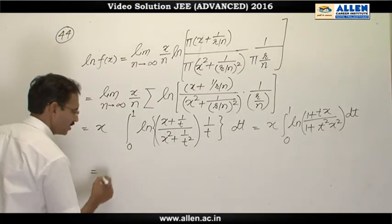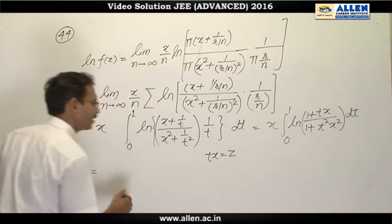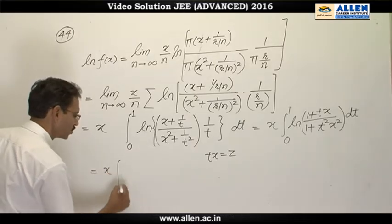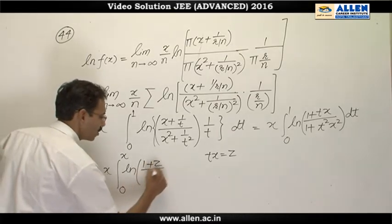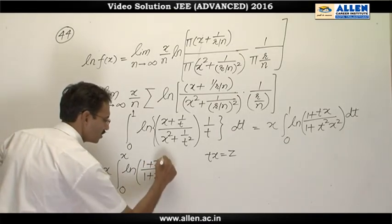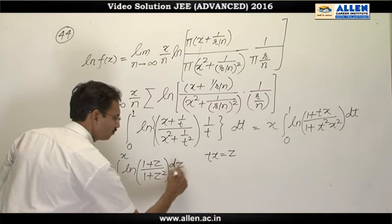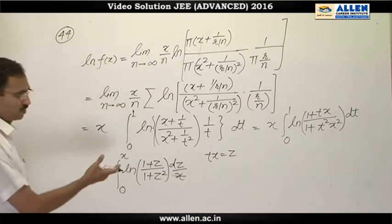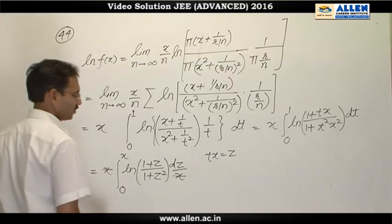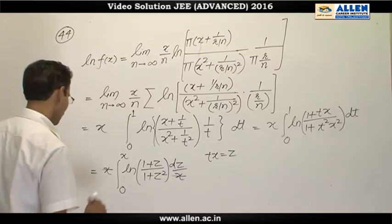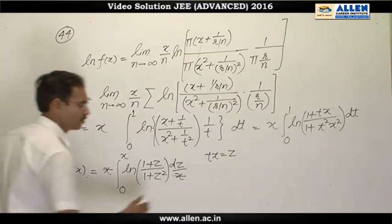Now, just to make it easier, we will substitute tx as z. x times, it is 0 to x now ln 1 plus z over 1 plus z square and dt is dz over x. I can cancel this x because it is with respect to z. We are integrating with respect to z. Now we have to analyze this function. This is ln f(x).